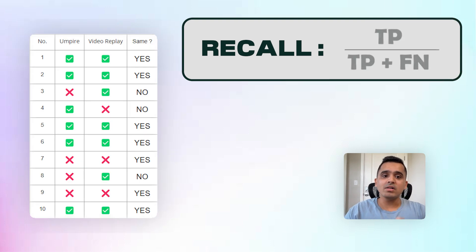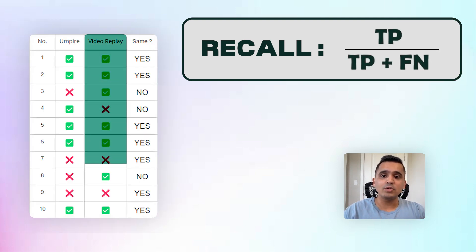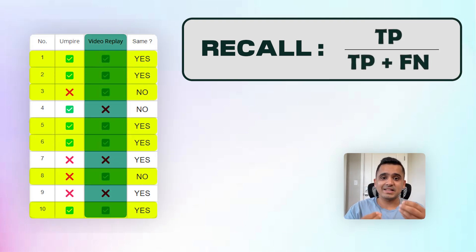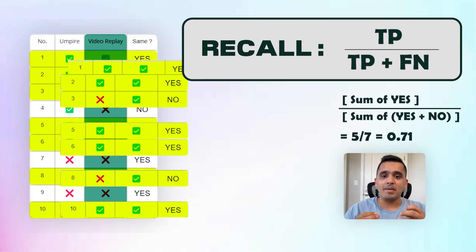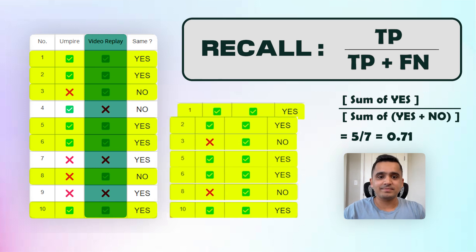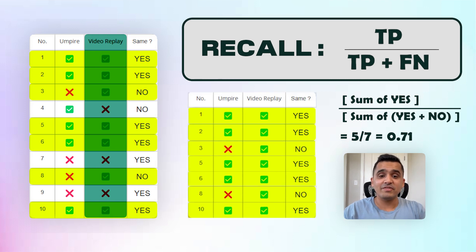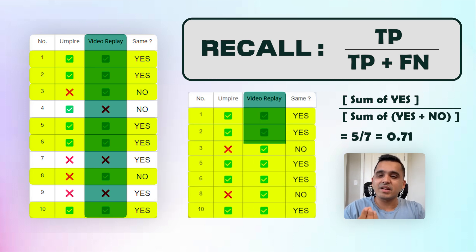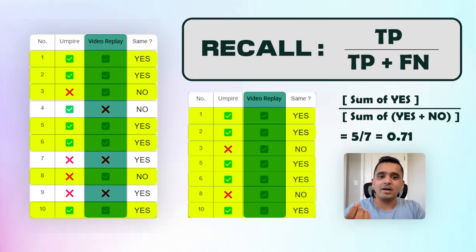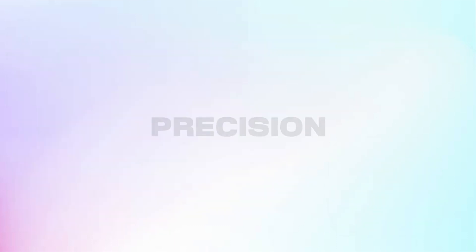Recall measures the model's ability to rightly call the outs. It assesses how many of the actual out situations the umpire successfully identified. If an umpire has a higher recall, it means they rarely miss an opportunity to correctly declare a batsman out when they are actually out.